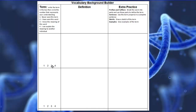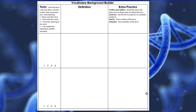You'll write the term in the box, circle one of the numbers representing your current understanding, go through the video, hear about what the word means, and write that down in the space for definition. This last box is for extra practice — you can use it in a sentence, draw a picture, give examples, or other things. Sometimes your teacher will assign it, but if not, feel free to use what works best for you.